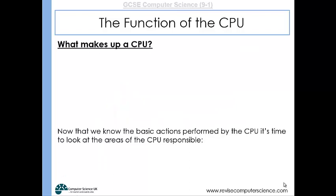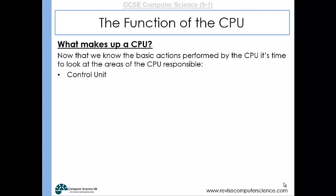So what makes up a CPU? Well, the CPU is made up of three really important areas. You've got the control unit, you've got the immediate access store which is sometimes referred to as cache, and you've got the arithmetic logic unit, the ALU.